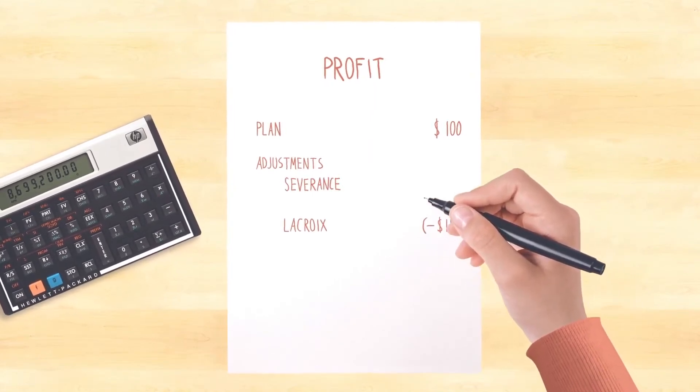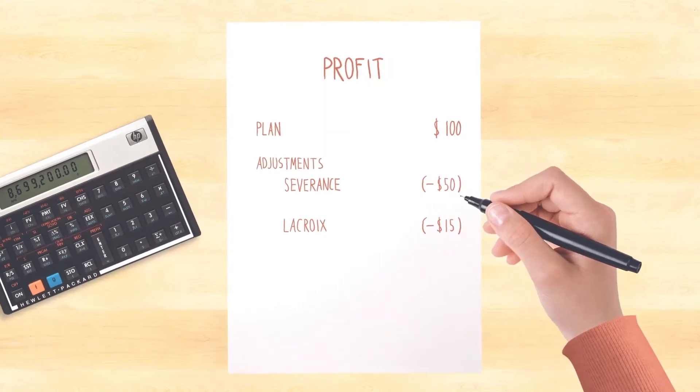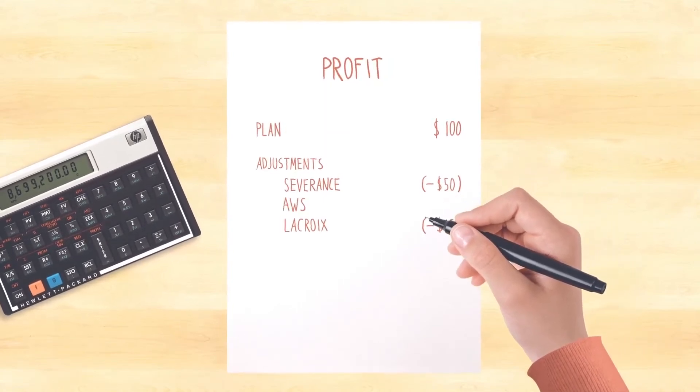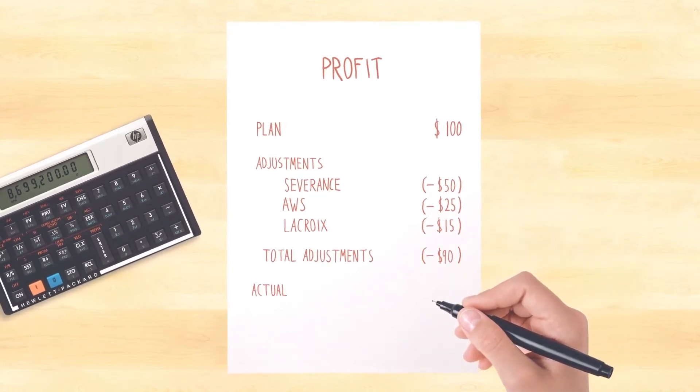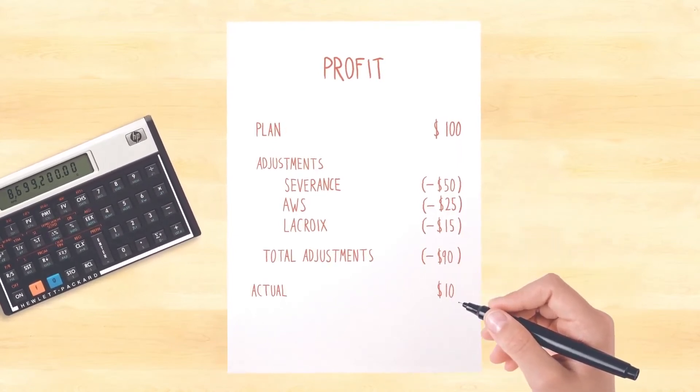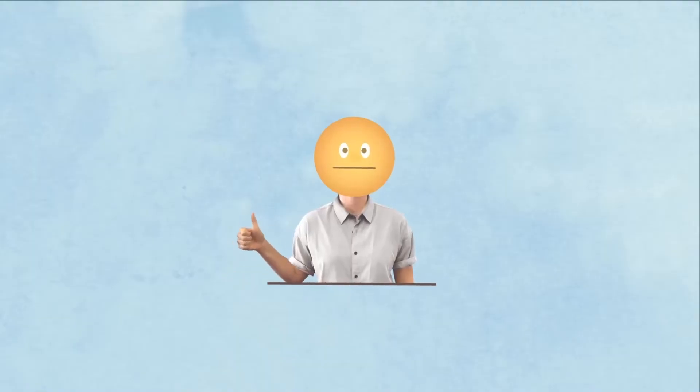We got some unplanned severance to that employee who only worked from 10 a.m. to 4 p.m., and we got a surprise bill from Amazon Web Services. So we ended up only making $10 in profit. The plan, the adjustments, and the actuals.